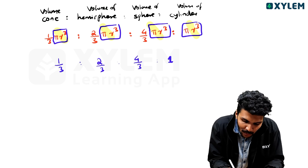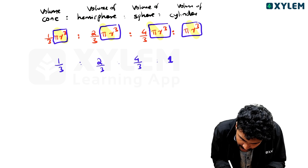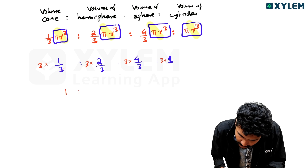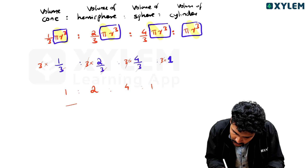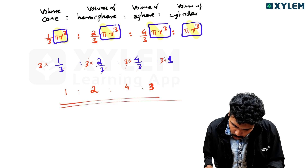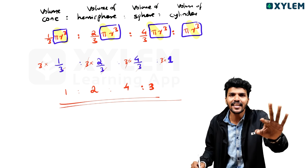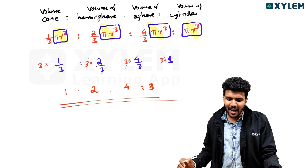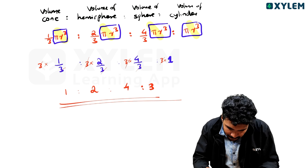Taking pi r cube common and multiplying denominators by 3: cone is 1, hemisphere is 2, sphere is 4, cylinder is 3. So the ratio of volumes — cone : hemisphere : sphere : cylinder — is 1 : 2 : 4 : 3. Very simple.